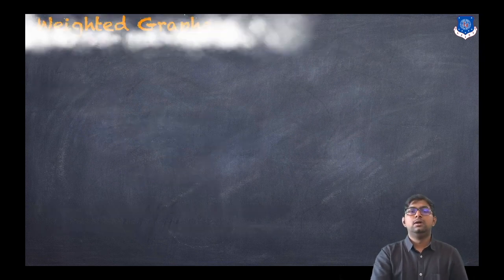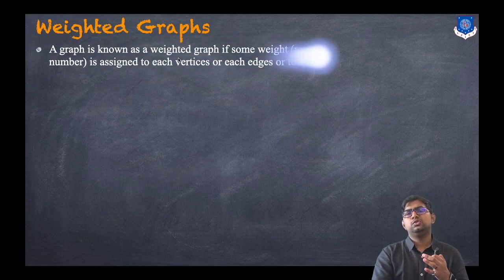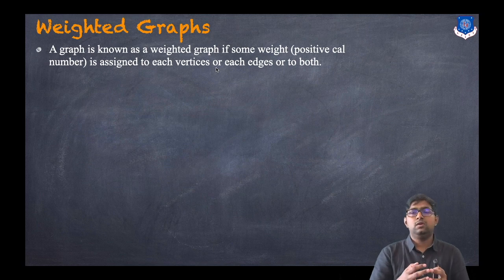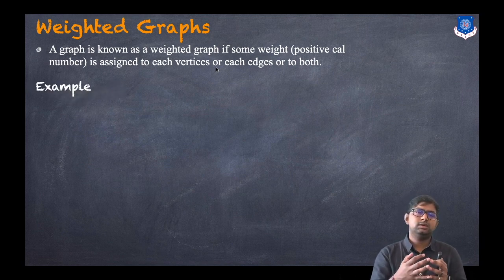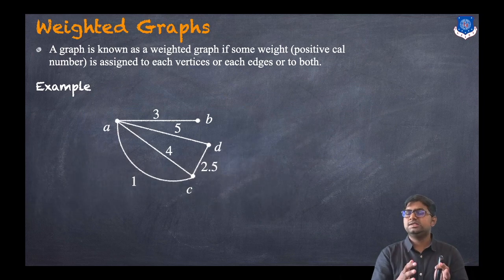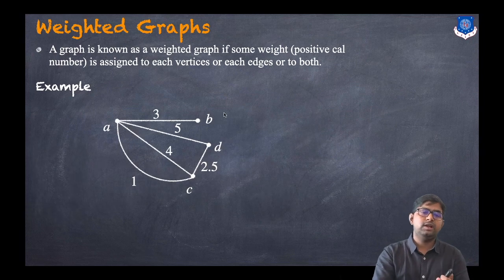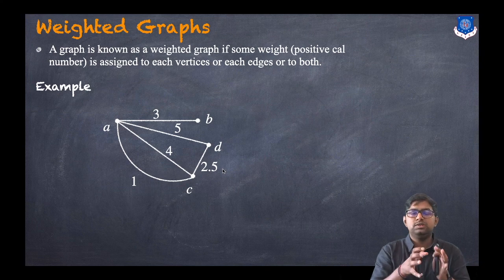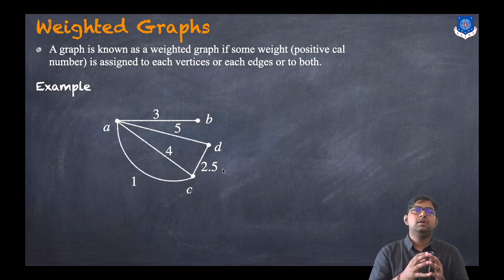Now let us discuss a weighted graph. A graph is known as a weighted graph if some weight — a positive real number — is assigned to each vertex, each edge, or both. Consider this graph with four vertices: weights such as 3, 5, 4, 1, and 2.5 are assigned to the edges. This is called a weighted graph, and its applications will be discussed in later sessions.